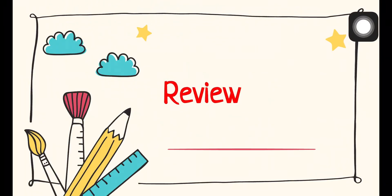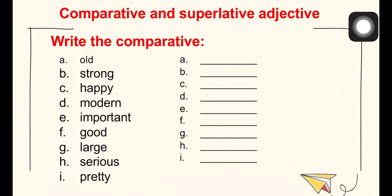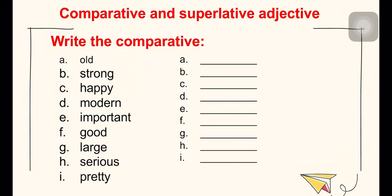Now let's do the exercise from A to I — write the comparative form. Let's spend two minutes to do this all together and then check it with me. Are you ready? Let's start now.